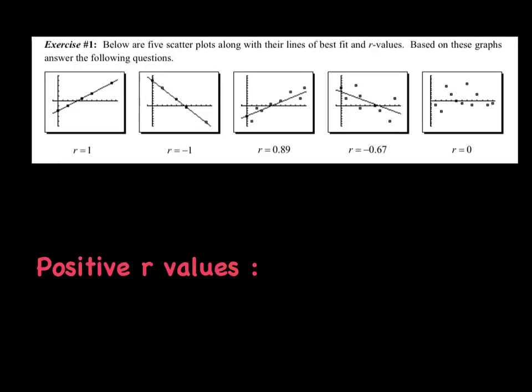Exercise one. Below are five scatter plots along with lines of best fit and R values. Based on the graph, we'll answer the following questions. So we do want you to pause it and copy these five graphs down. You know, just as quick as you can, a quick axis, plot these points as nice and easy as you can. It doesn't need to be perfect, and a nice line going through. Notice these are kind of scattered. Just do your best. You don't have to plot actual points. Just kind of get them on there. And like I said, pause it, and get those in your notebook, please.